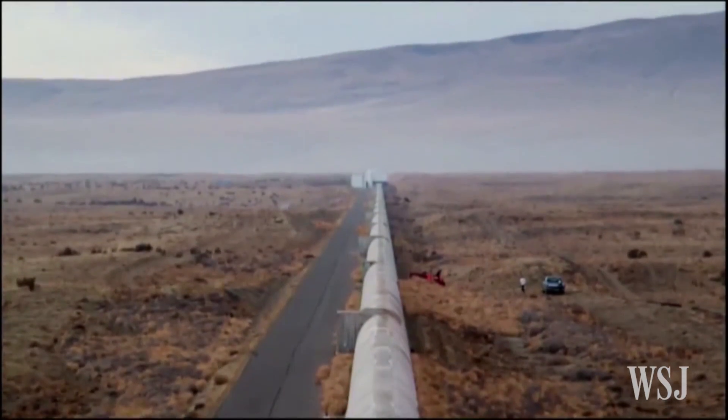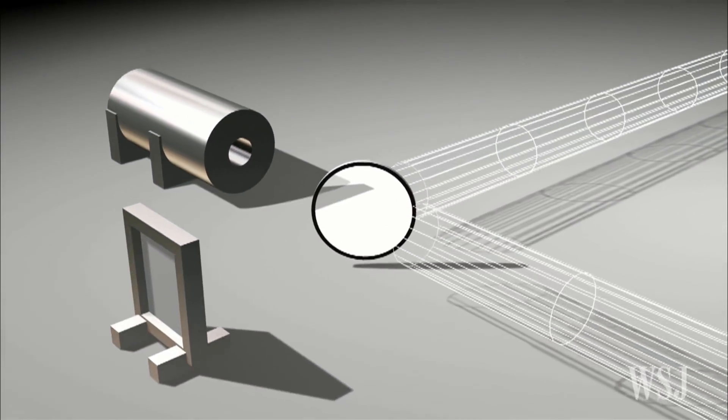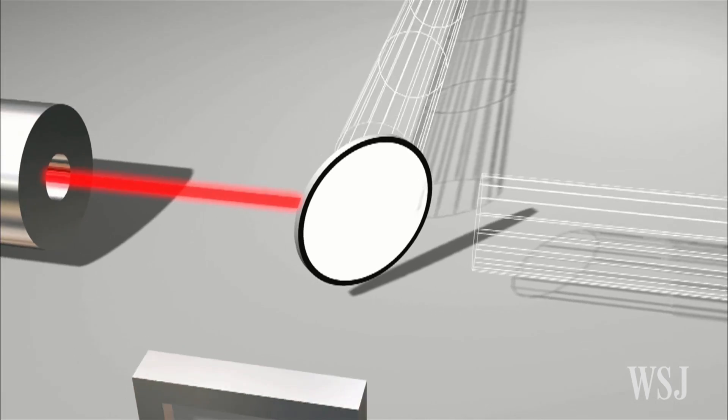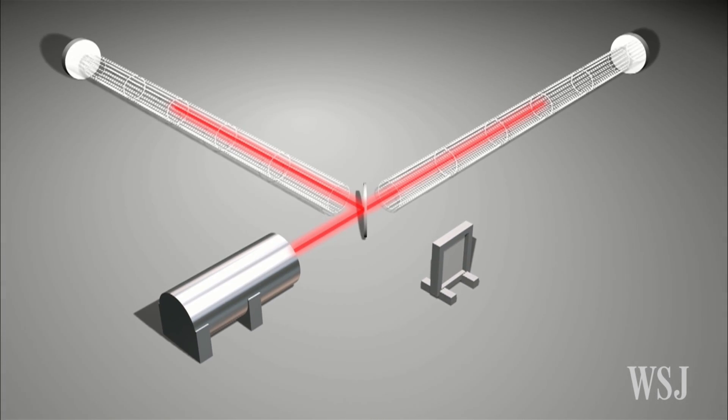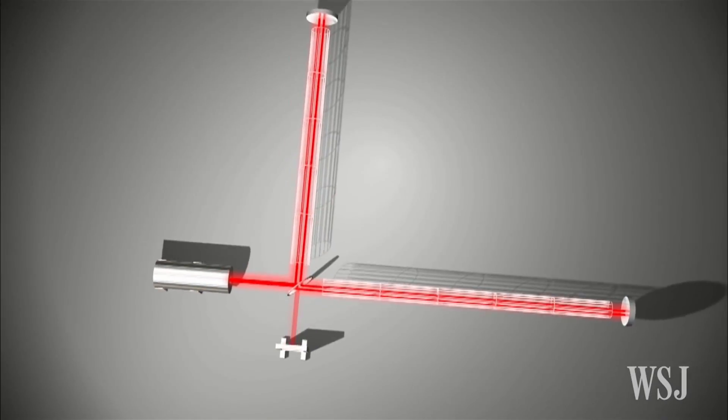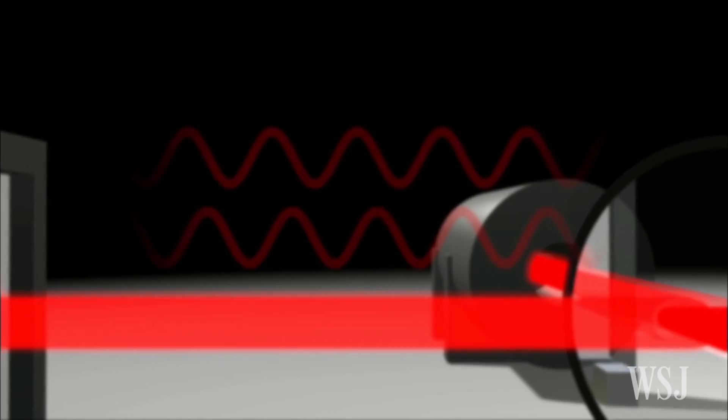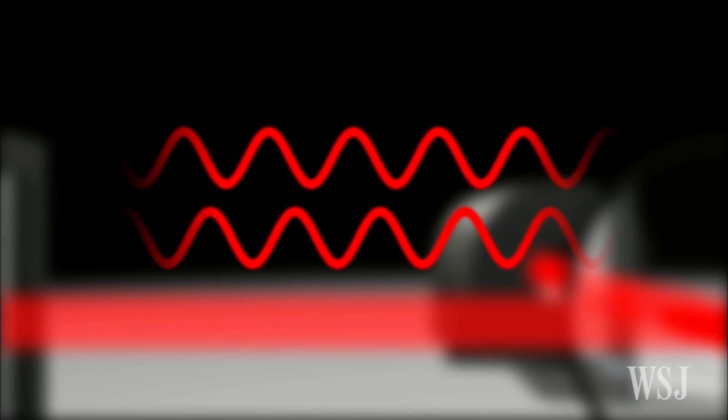These LIGO detectors measure how long it takes controlled laser light to travel between suspended mirrors. On September 14, 2015, the researchers say they were able to detect the waves generated by the black holes as they crushed together to merge into a single black hole.